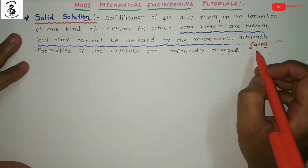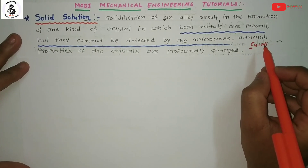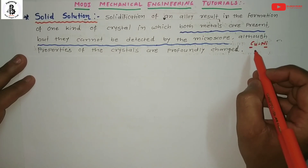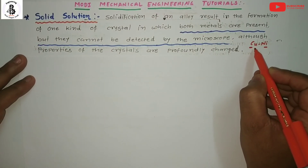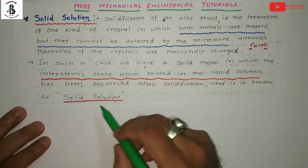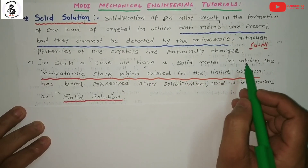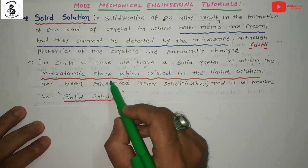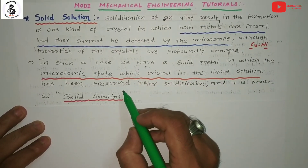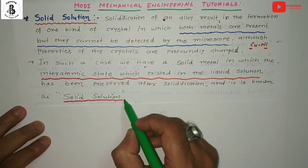The major constituent — whether copper or nickel — determines the properties of the material. According to the weight percentage of copper or nickel, such properties are present. In such a case, we have a solid metal in which the interatomic state that existed in the liquid solution has been preserved after solidification, and it is known as a solid solution.